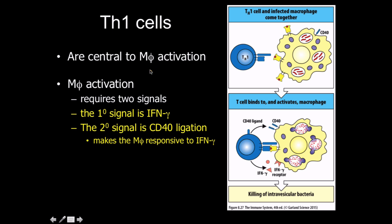Th1 cells are central to macrophage activation. Macrophage activation was one of the first things we discovered and one of the mechanisms we understand well — probably why it's covered in your textbook. Macrophage activation requires two signals: the first is interferon gamma, a soluble cytokine; the second is the CD40 ligand, which makes the macrophage more responsive to interferon gamma. This becomes a kind of logarithmic effect, and this pairing of a membrane-bound ligand and a soluble cytokine is a common trend providing location control.